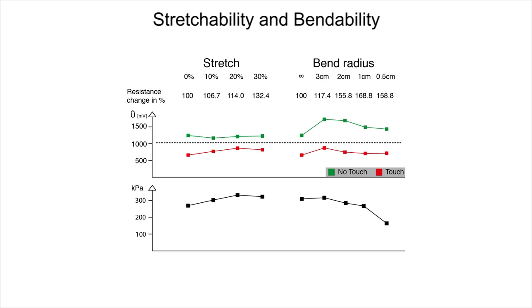Results from a technical evaluation show that the sensor remains functional while it is stretched by up to 30%. This is more stretchable than skin. It also remains functional while it is bent with a radius of 5 millimeters and hence supports use on curved body locations.